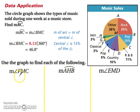The measure of angle FMC. Well, FMC is 30% of the data. So 360 times 0.30 gives us 108 degrees. So the measure of angle FMC is 108.